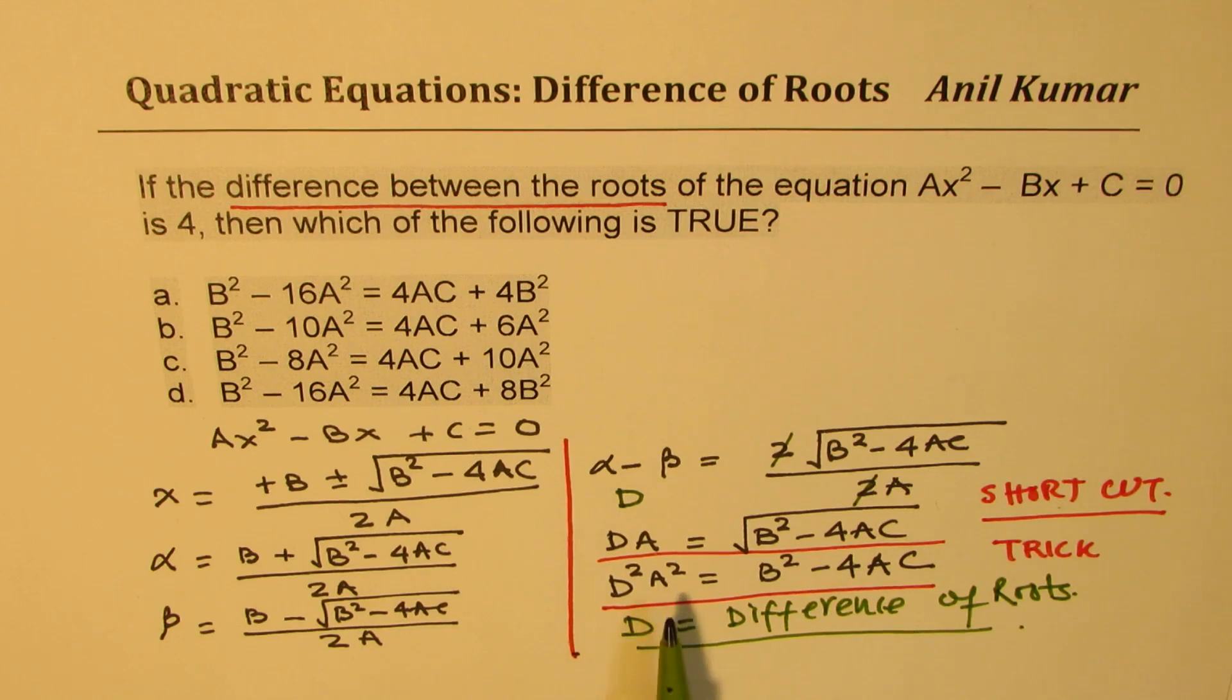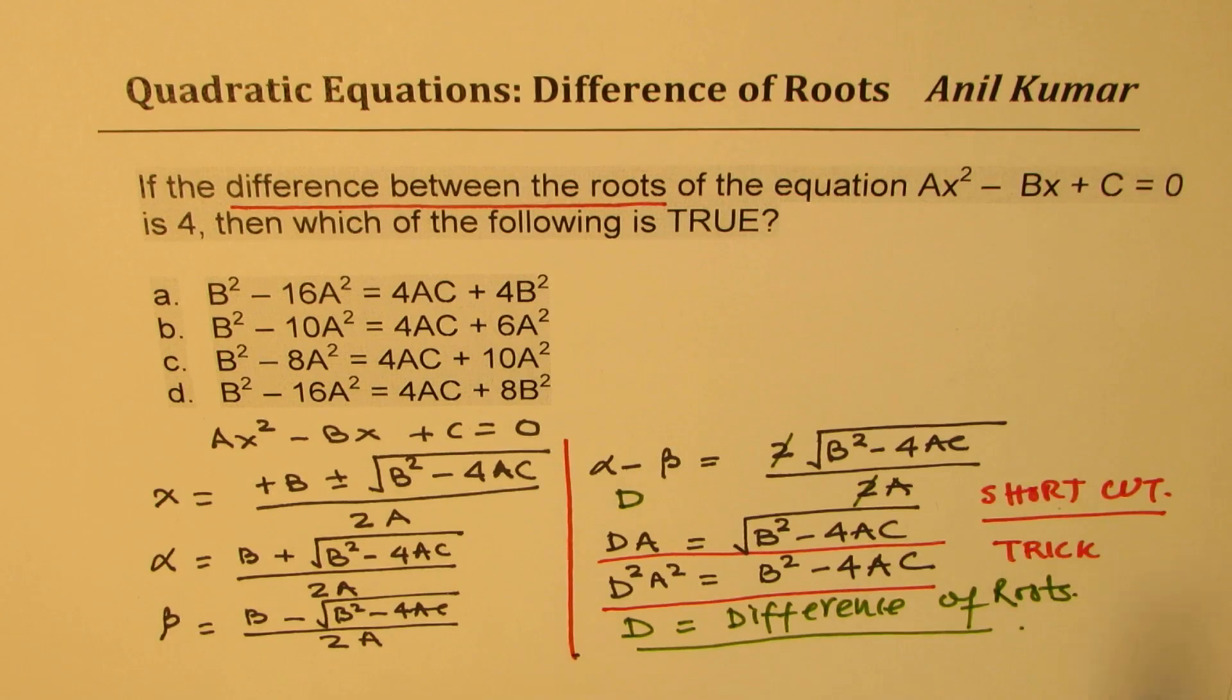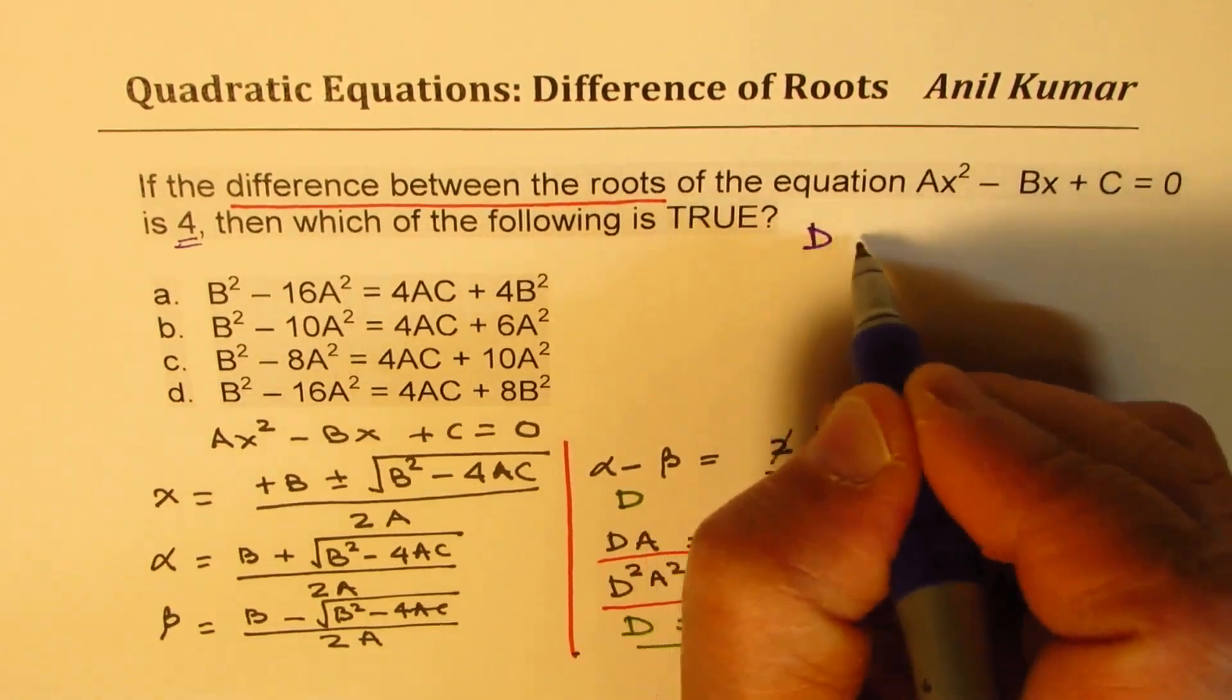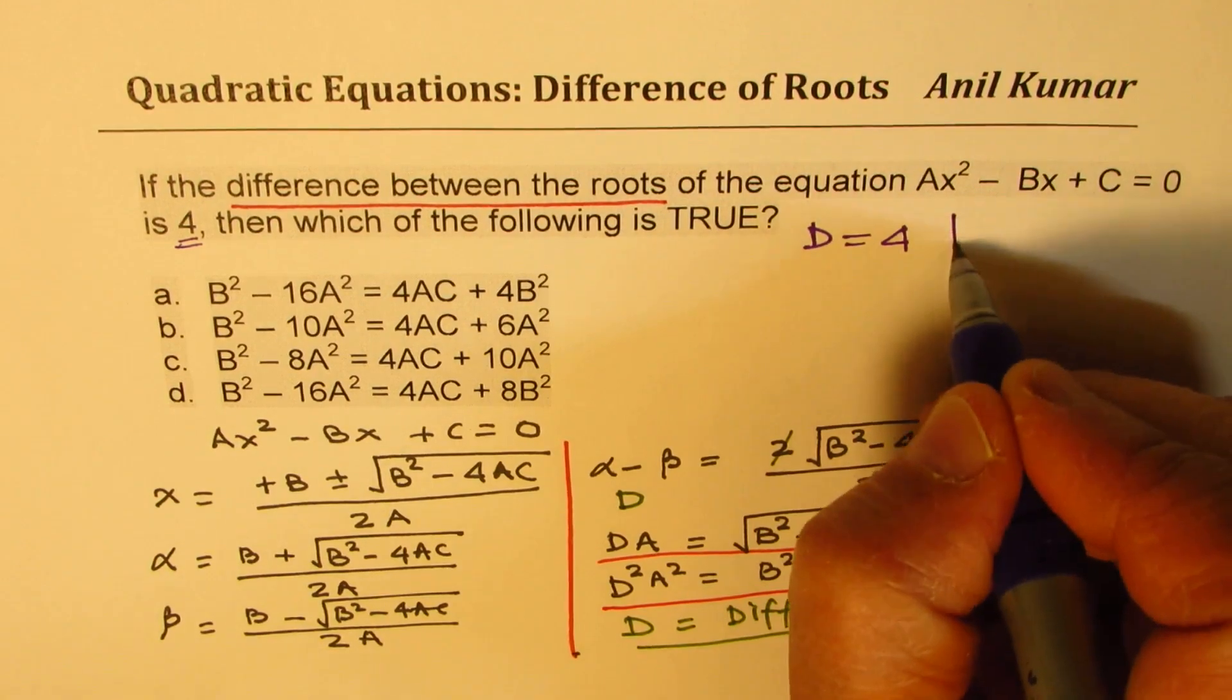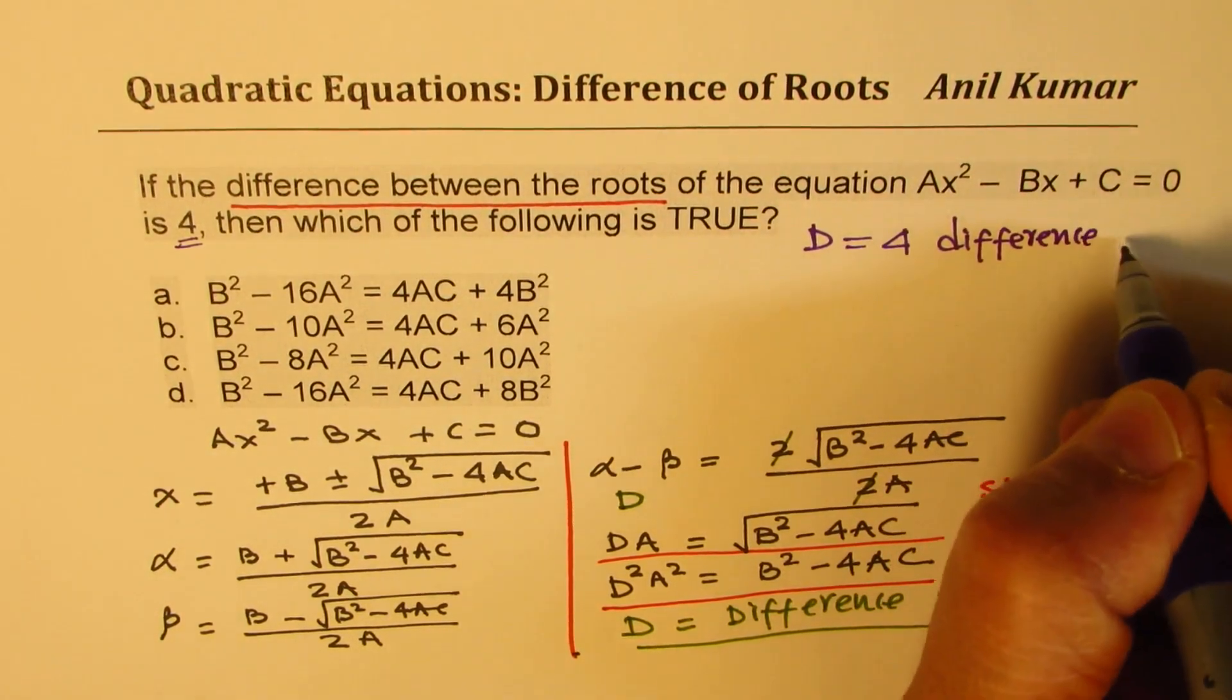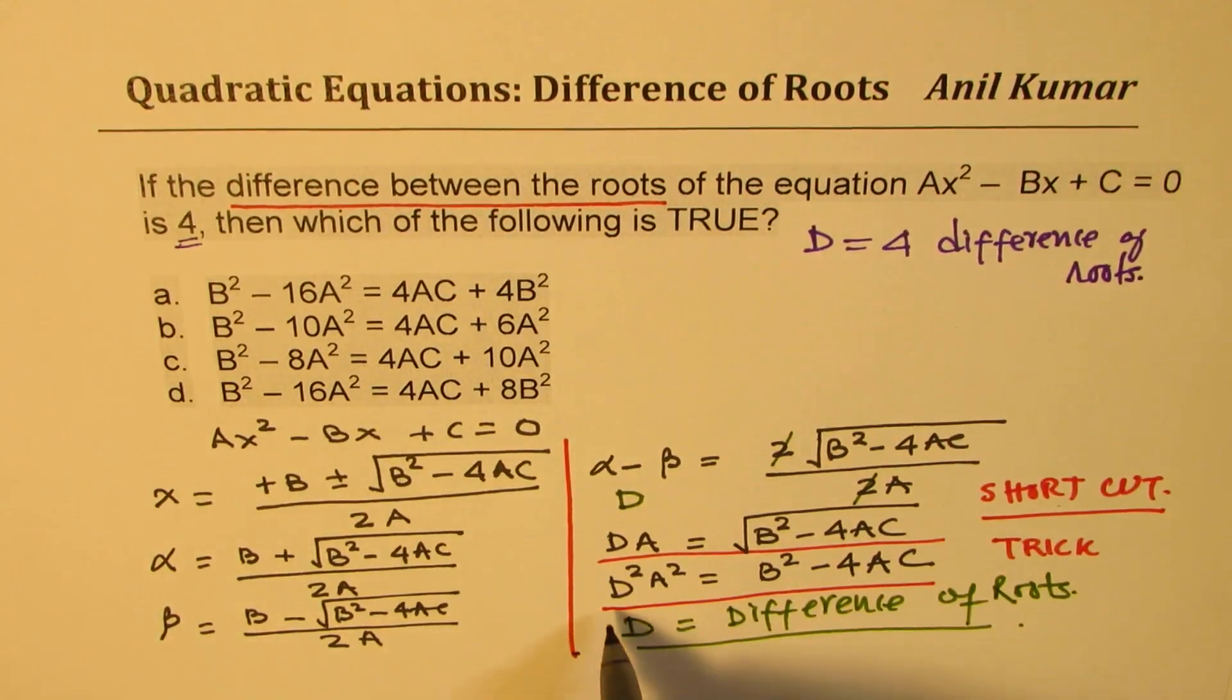Now, knowing this, we can easily get our solution. We know 4ac is on one side for all of them. What are we looking for? In our case, we're given that the difference is 4, so d = 4. That is the difference of roots.